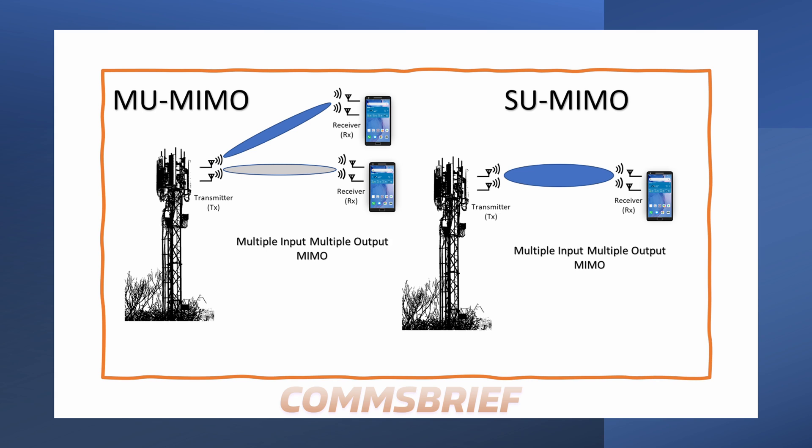Since these layers can carry separate streams of data, depending on the data rate required for a particular user device, the network can decide how to utilize the available data rate. For example, if the network decides to offer a higher data rate to a single user at a time — such as for watching a 4K video — it may use Single-User MIMO to allocate all the available layers to one particular user. However, if the network decides to accommodate multiple simultaneous data sessions, it may use Multi-User MIMO to share the available data rate with multiple users.